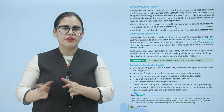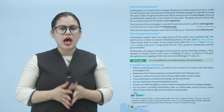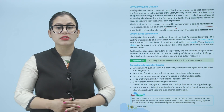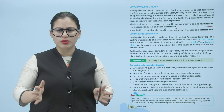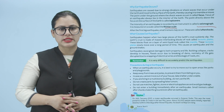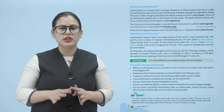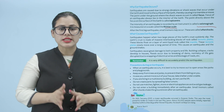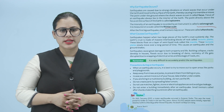What causes earthquakes? Earthquakes happen when two large pieces of the earth's crust suddenly slip. The earth's crust is made of massive interlocking blocks of rock called tectonic plates. These blocks float on a layer of semi-liquid rock called the mantle. These tectonic plates slowly move over a long period of time, and this causes an earthquake when the ground shakes.